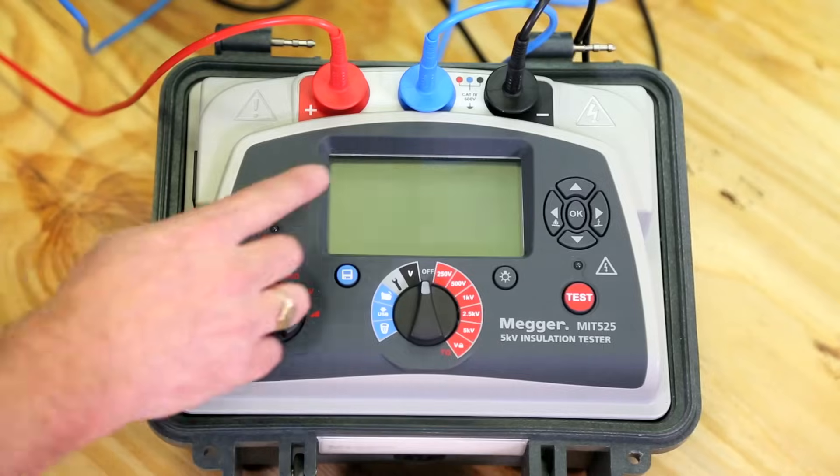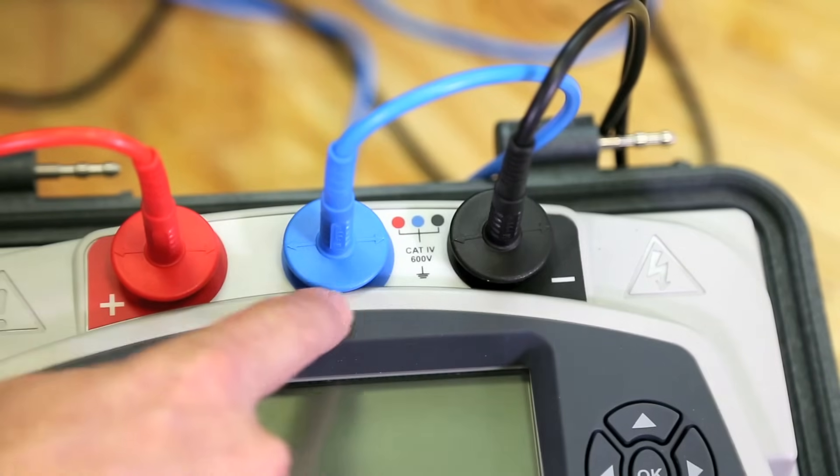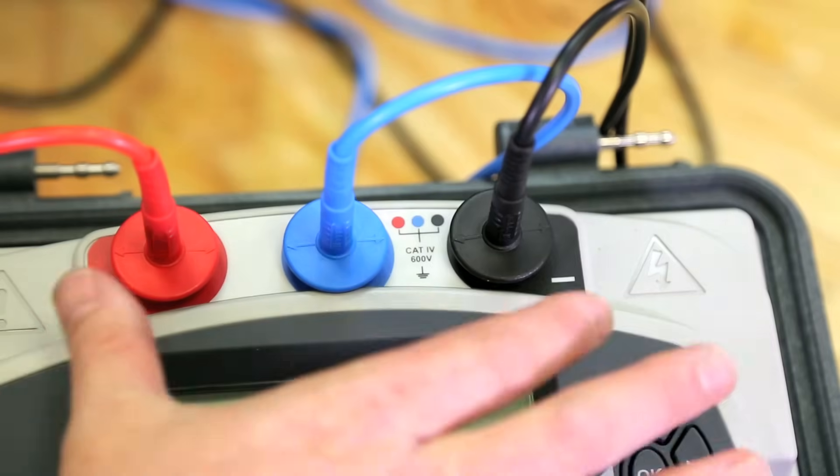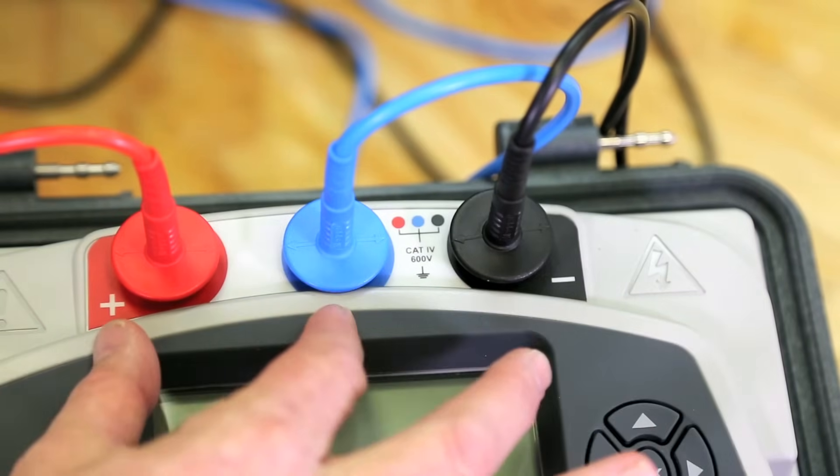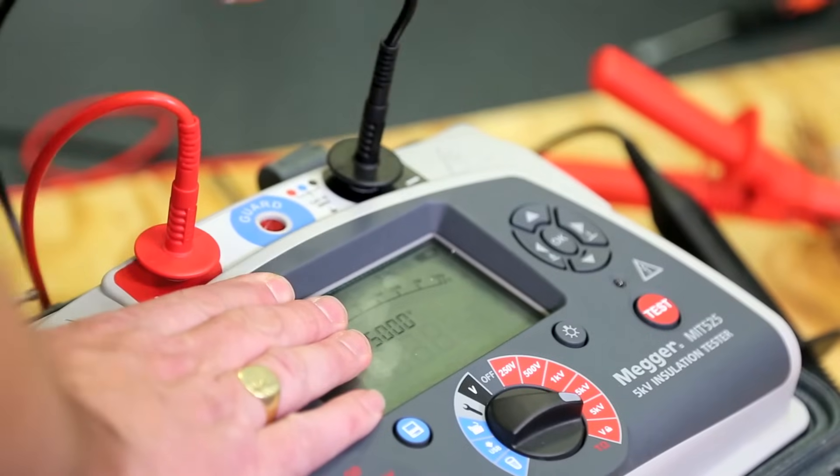All three terminals are rated to Category 4, 600 volts and 1000 volts between each of them, protecting the unit against misconnection. The lead terminations lock to prevent accidental disconnection.